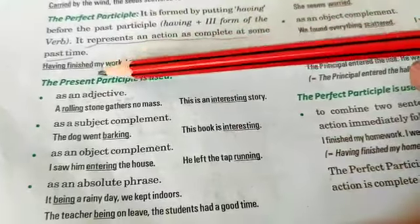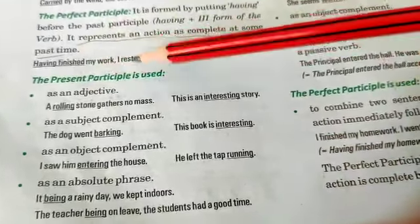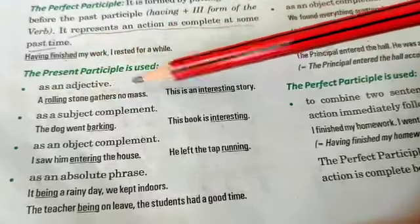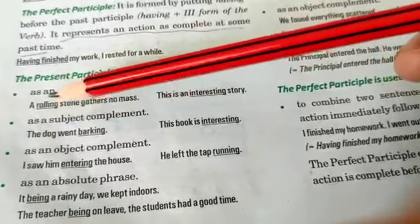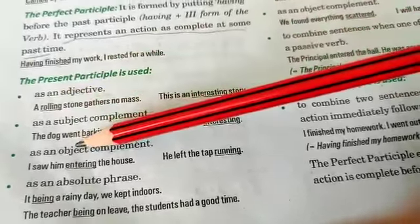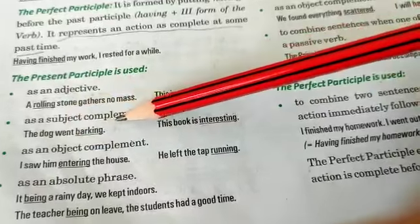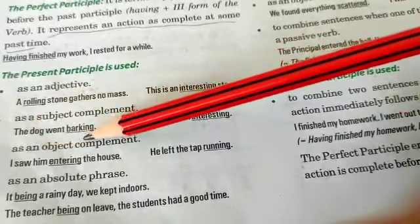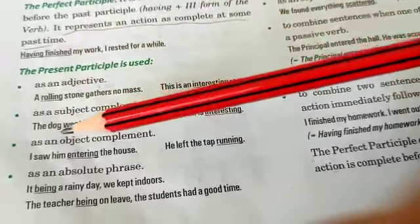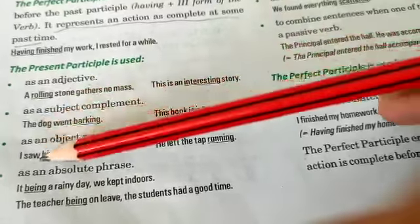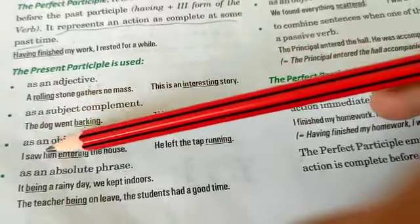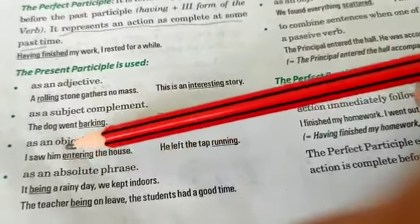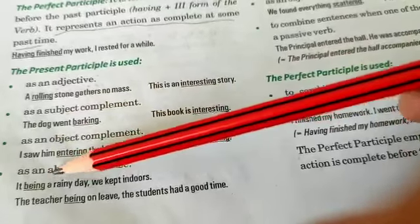Present participle is used as an adjective, like 'a rolling stone gathers no moss' — 'rolling' is used as an adjective. It is also used as a subject complement, like 'the dog went barking' — 'barking' is a complement to the subject 'dog.' It also works as an object complement: 'I saw him entering the house' — 'him' is the object and 'entering' is the complement.